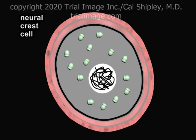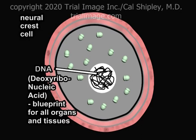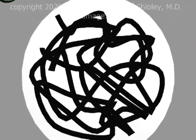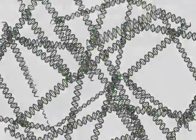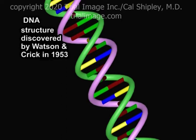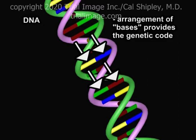Like most of the cells in the human body, neural crest cells have a nucleus which contains DNA. DNA is the blueprint for the production of all organs and tissues in the human body. The structure of DNA was first discovered by Watson and Crick in the 1950s. DNA consists of a double helix, within which are connected pairs of nucleic acids, also known as bases.